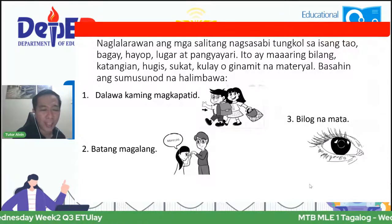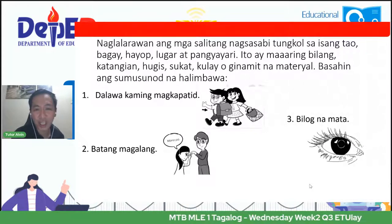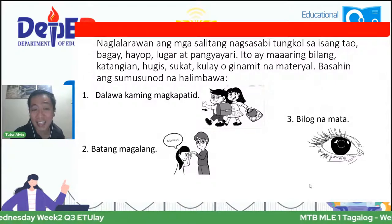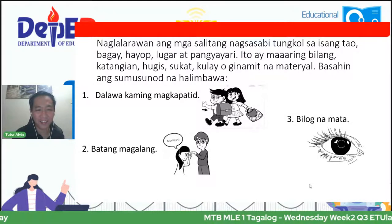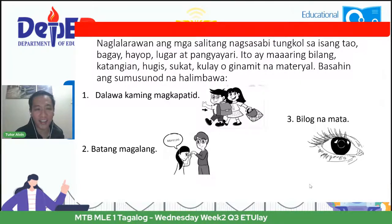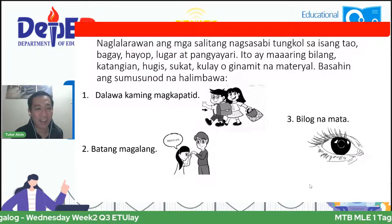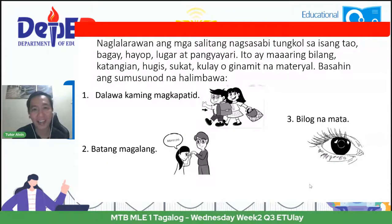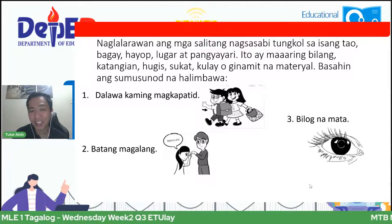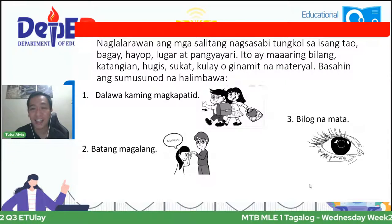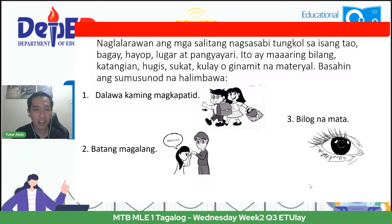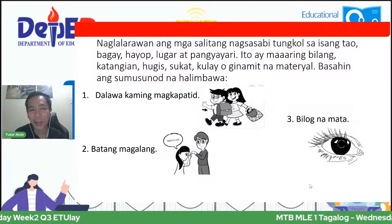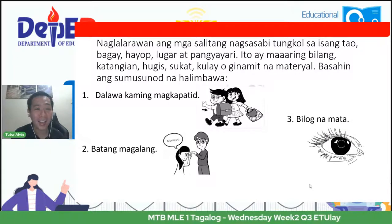Ikalawa, batang magalang. Nasaan dyan ang pang-uri o salitang naglalarawan? Ito ay ang salitang magalang. Ano ang inilalarawan ng salitang magalang? Ito ay ang salitang bata, na pangngalan. Ikatlo, bilog na mata. Ang tinatawag nating naglalarawan ay ang salitang bilog. Ano ang inilalarawan? Ang mata. Anong bahagi ng pananalita ito? Ito ay pangngalan — bagay.